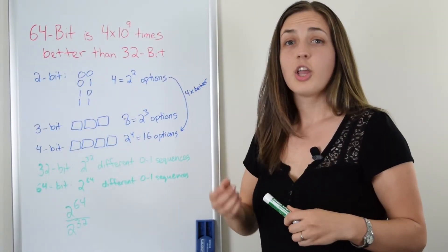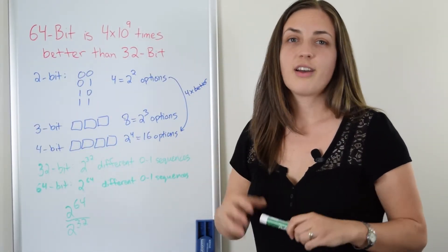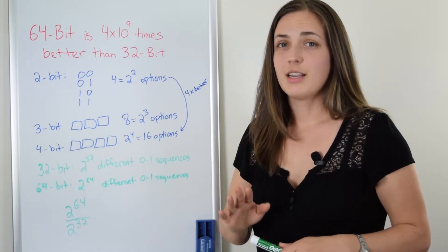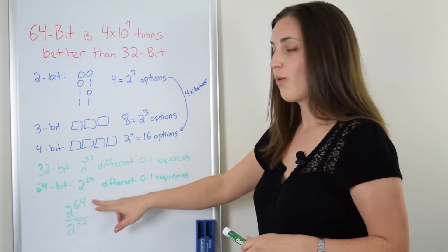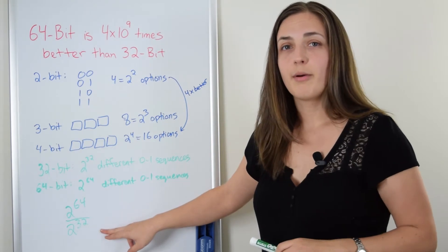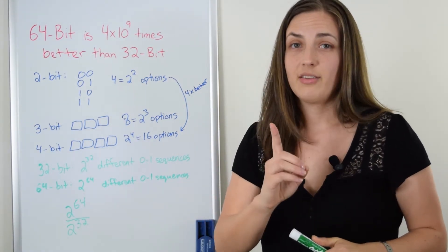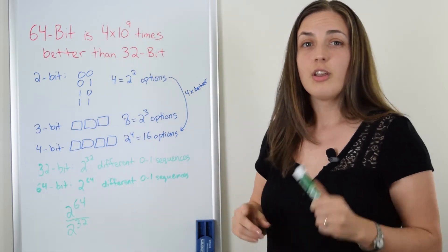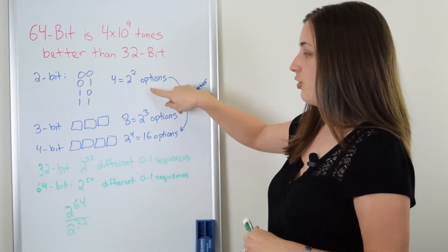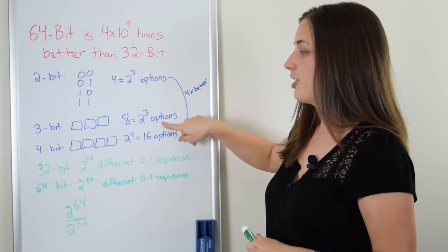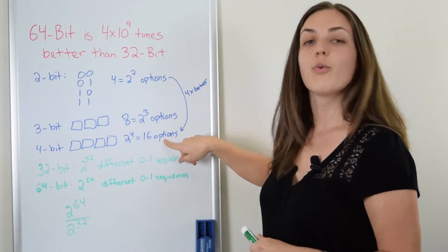So let's take a look. Two to the power of 64 divided by two to the power of 32. It might be tempting to think that you can just say that this is twice as good as this, but you have to remember that you're dealing with exponents. Every time you increase by one bit, you are doubling the potential. So look at the difference between two and three, we doubled the potential. From three to four, we doubled again.